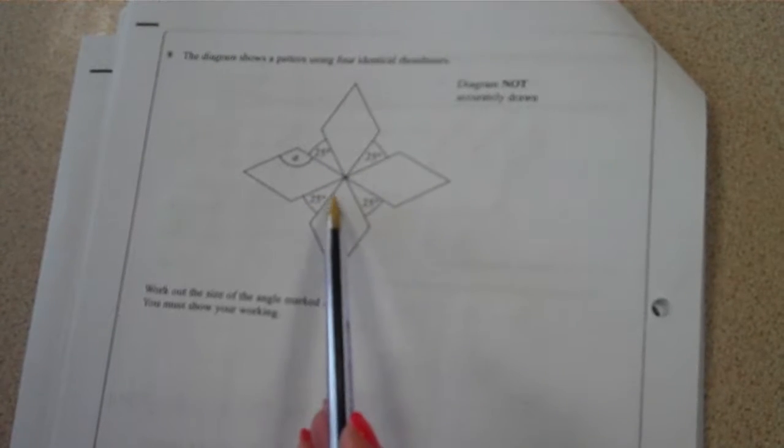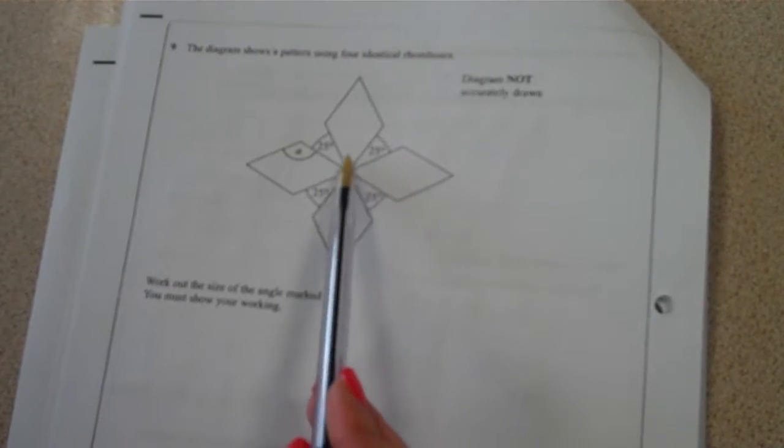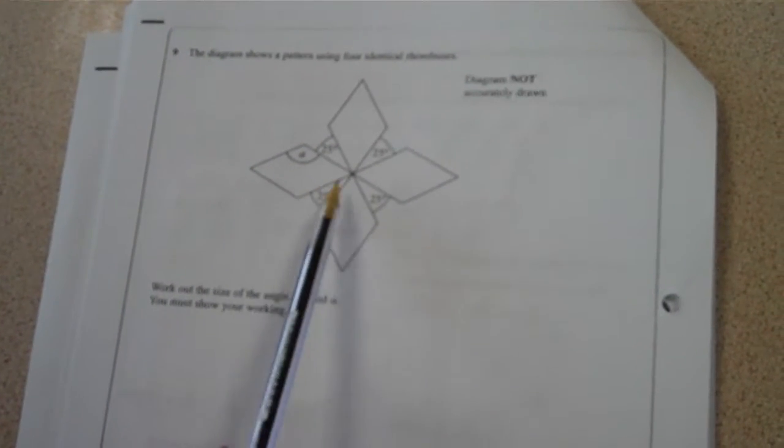So involved in this question you've got angles that are all around here, so you've got angles around a point which you know add up to 360 degrees. And then you've also within that got shapes here which are four-sided shapes, so quadrilaterals, so therefore we know that angles in a quadrilateral also add up to 360 degrees.